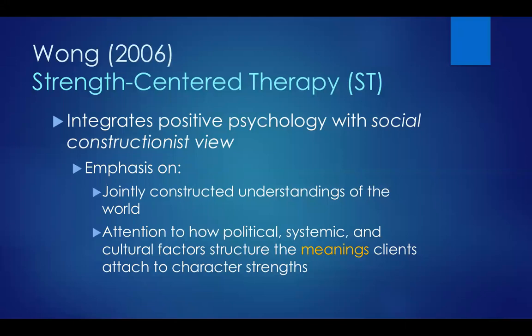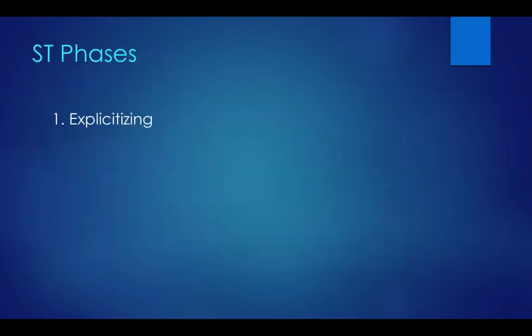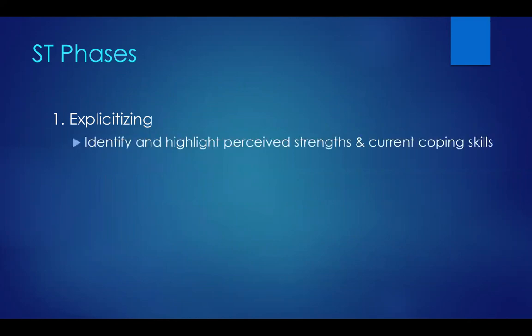For SCT, Wong proposes four phases. The first is called the explicitizing phase — making things explicit by trying not to have any assumptions. The therapist identifies, talks about, and highlights the client's current perceived strengths and current coping skills, without assuming anything. They want the client to talk about what they perceive as their strengths and their current coping skills.